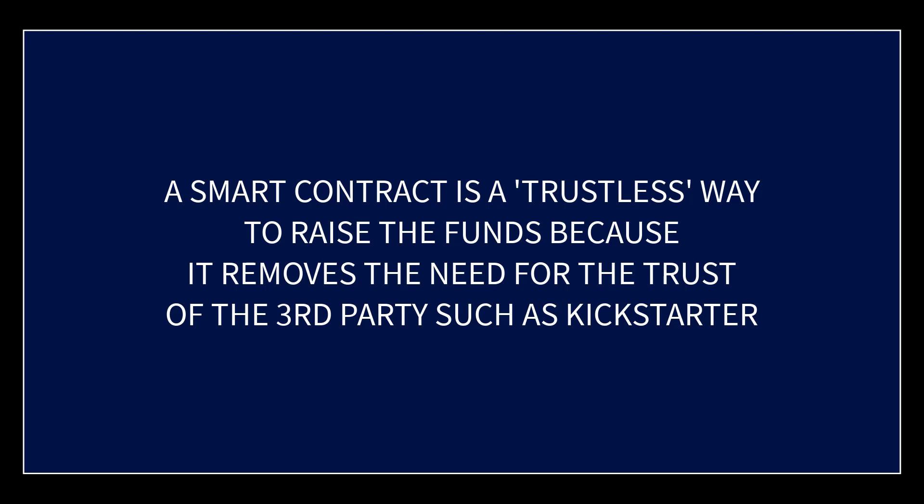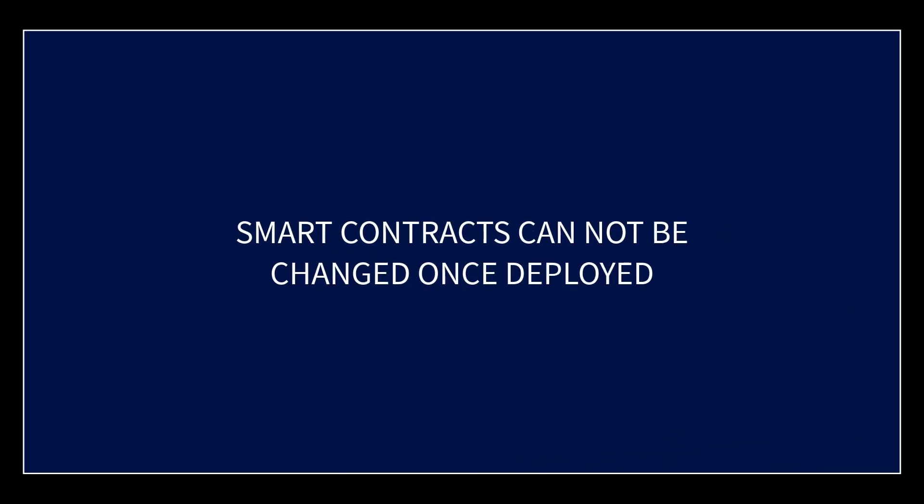With a smart contract it's what's called a trustless system. It is a program that lives on the blockchain, written in such a way that when you donate to a project, if the funding goal is met the funds are automatically transmitted to the project, and if the funding goal is not met the money is automatically refunded to the donors. Once a smart contract has been written and deployed it's what's called immutable — meaning it cannot be changed or altered. The code is also open source, so anybody can go in and look at it. A smart contract removes the need for trusting a third party.